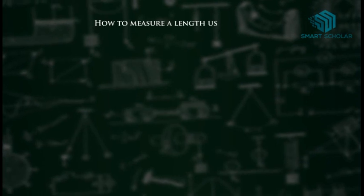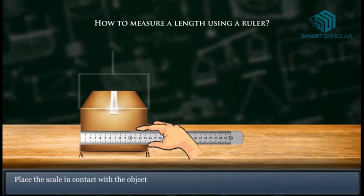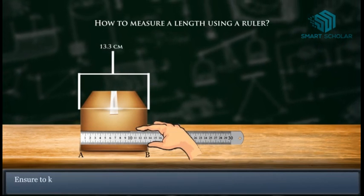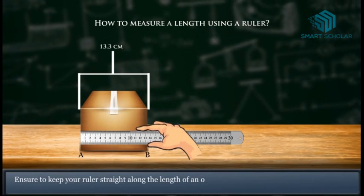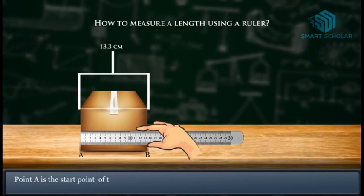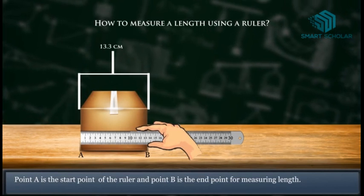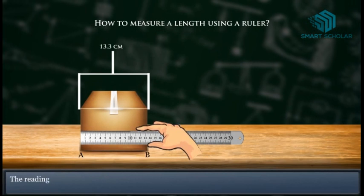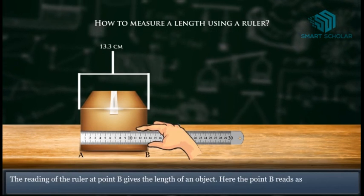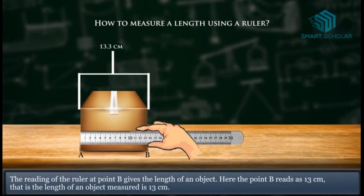How to measure length using a ruler? Place the scale in contact with the object along its length A to B. Ensure to keep your ruler straight along the length of an object. Point A is the start point zero of the ruler and point B is the end point for measuring length. The reading of the ruler at point B gives the length of an object. Here, the point B reads as 13 centimeters. That is, the length of the object measured is 13 centimeters.